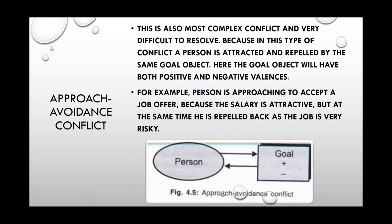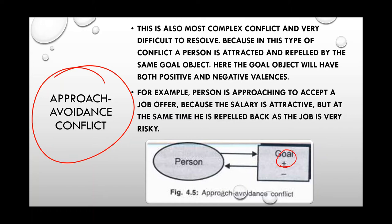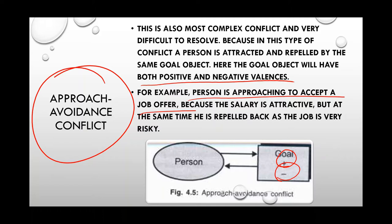Next is approach-avoidance conflict. This is the most complex conflict and very difficult to resolve, because the person is attracted by positive power and pulled back by negative power at the same time. The object has both positive and negative aspects. For example, a person approaches to accept a job offer because the salary is attractive, but is pulled back because the job is very risky. The attraction of the goal and the inability to approach it leads to frustration and tension.